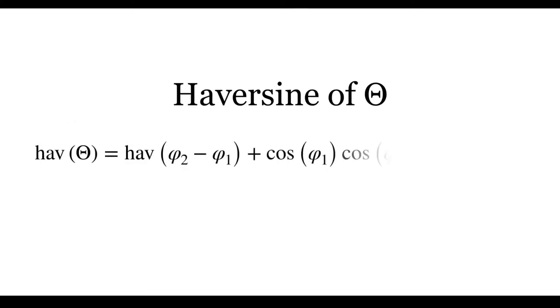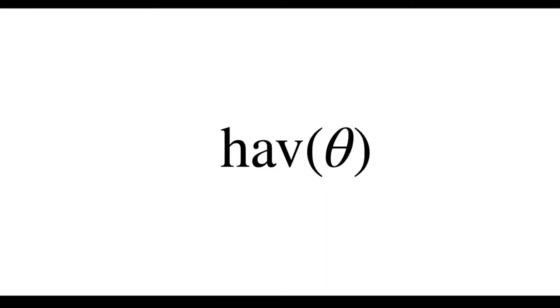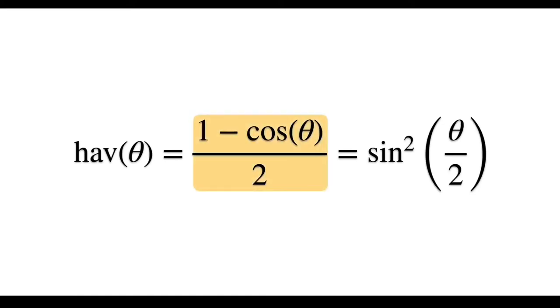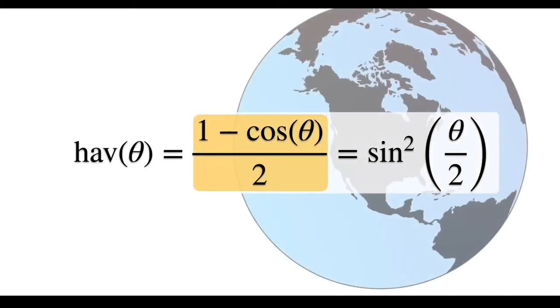Haversine formula allows the haversine of theta, otherwise half theta, to be computed directly from the latitude and longitude of the two points. To evaluate this equation we have to know about the haversine angle. Haversine of theta is half of 1 minus cos theta. By evaluating this theta we can obtain the distance between two points on the sphere.